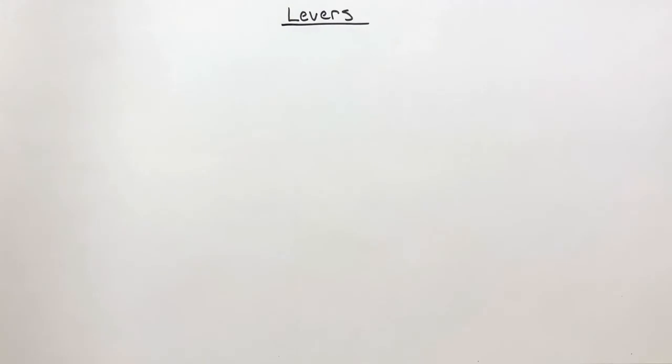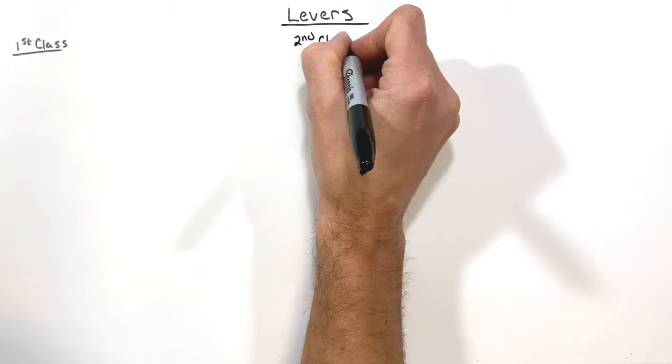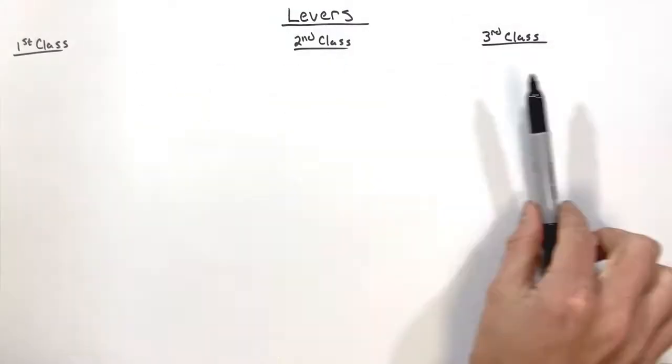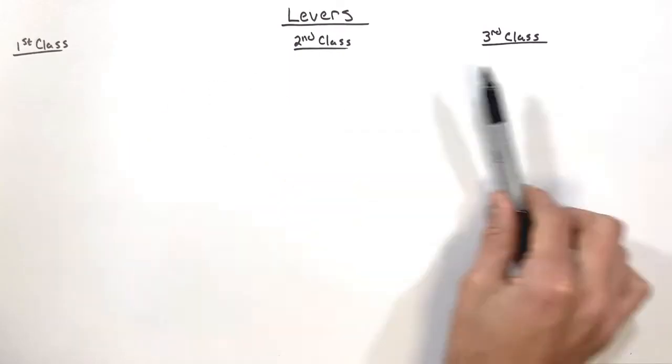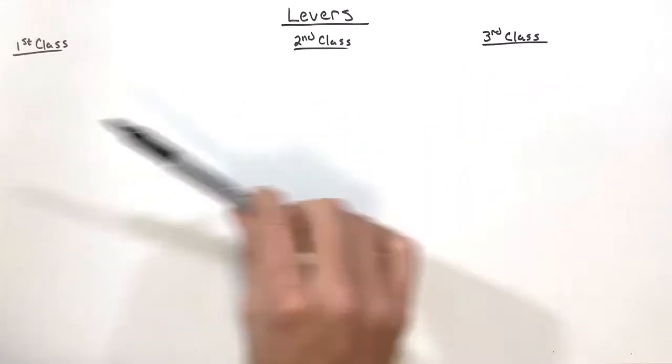Okay, today we're talking about levers. Now there's actually three different types of levers. These three different types of levers are differentiated from one another in how the input and output forces are arranged relative to the fulcrum.